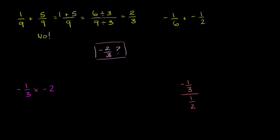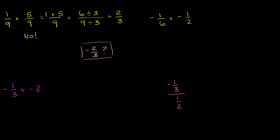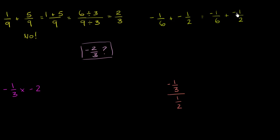Now let's go to this green expression right over here. We have negative 1 sixth plus negative 1 half. We can view the negative as being in front of each fraction — this is the same thing as negative 1 over 6 plus negative 1 over 2. Negative 1 half is the same thing as negative 1 divided by 2. Whenever we add two fractions, we want to have the same denominator.